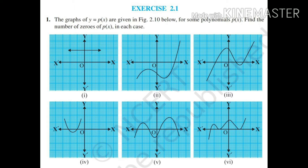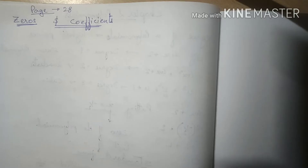Looking at the exercise examples: the first graph has no cut on the x-axis, so there are no zeros. The second cuts once, giving one zero. The third has three zeros, the fourth has two zeros, the fifth has four zeros, and the sixth has three zeros.